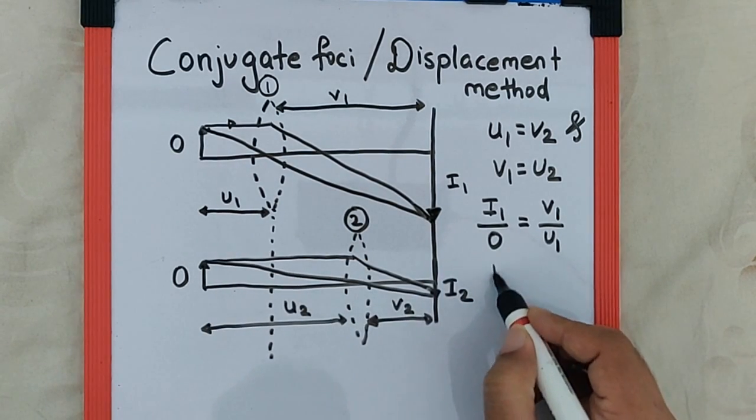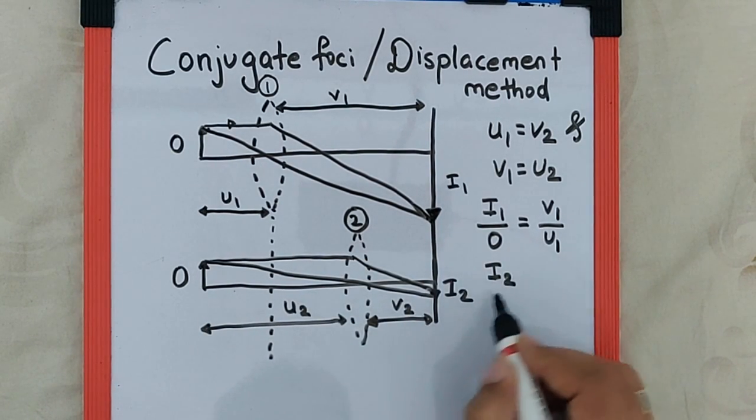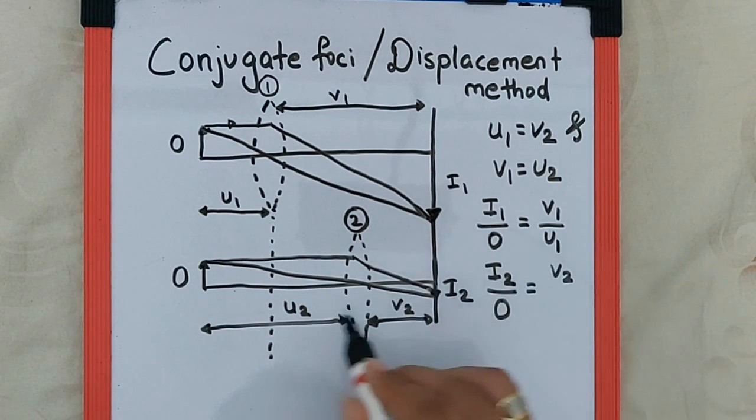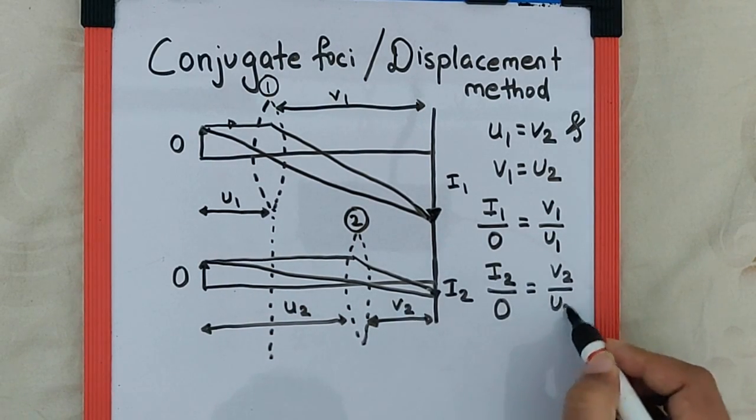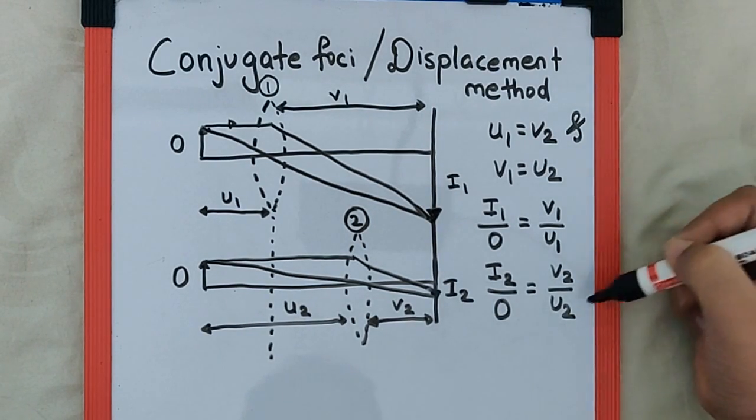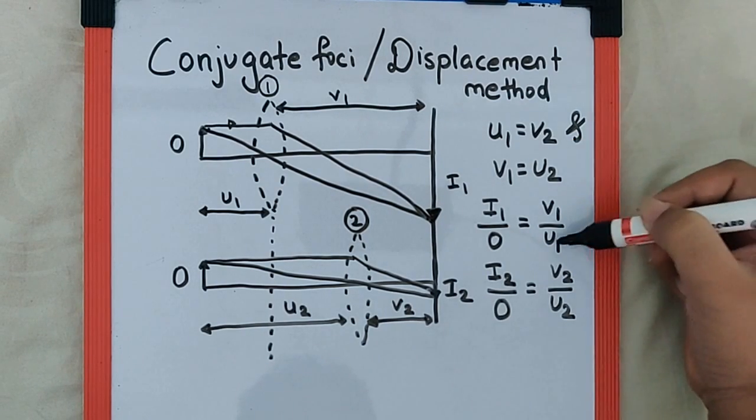and for the second case, height of image upon height of object is distance of image upon distance of object. Now, since we know V1 equals U2 and U1 equals V2,